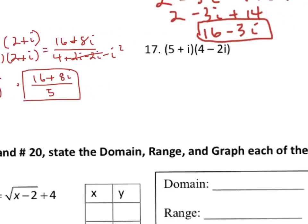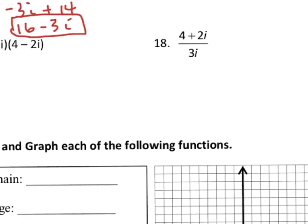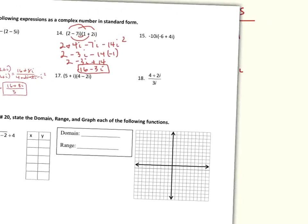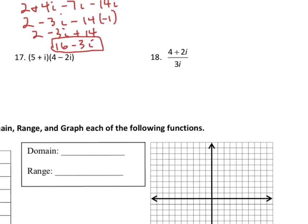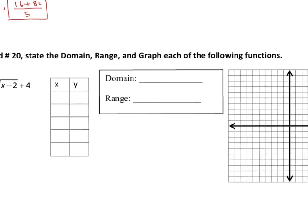For number 18, you just have three i on the bottom, which is actually easier. If you have a singular i on the bottom, just multiply the top and bottom by i. You'll get i squared on the bottom, which equals negative one, and that gets rid of the i. That's a quick tip for that one.